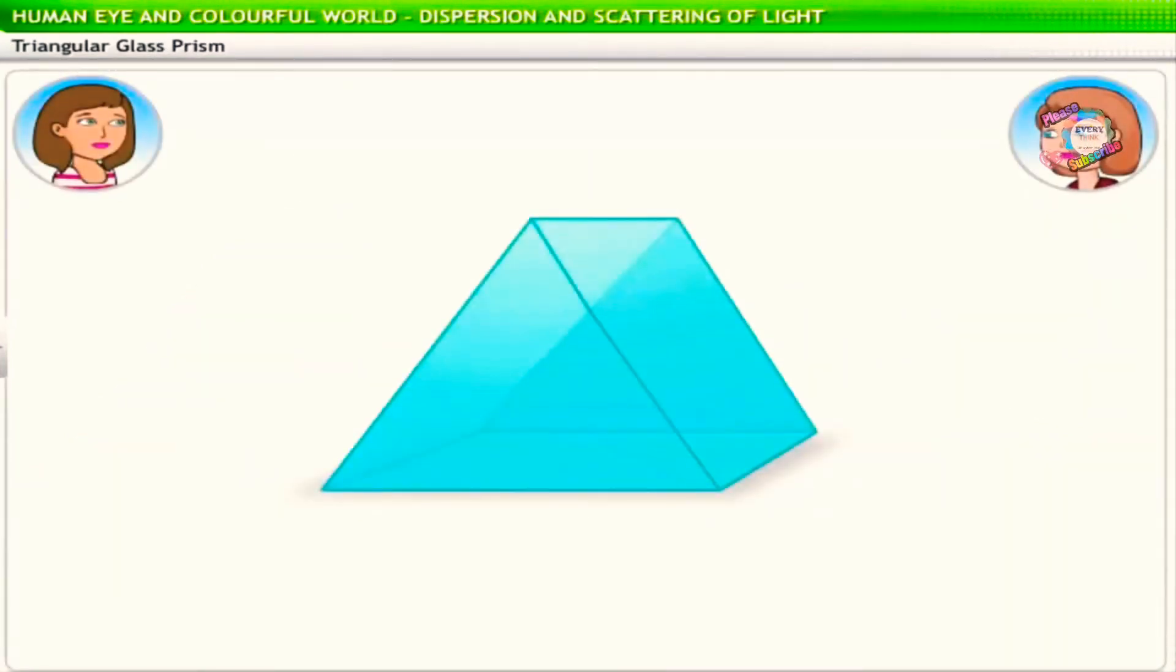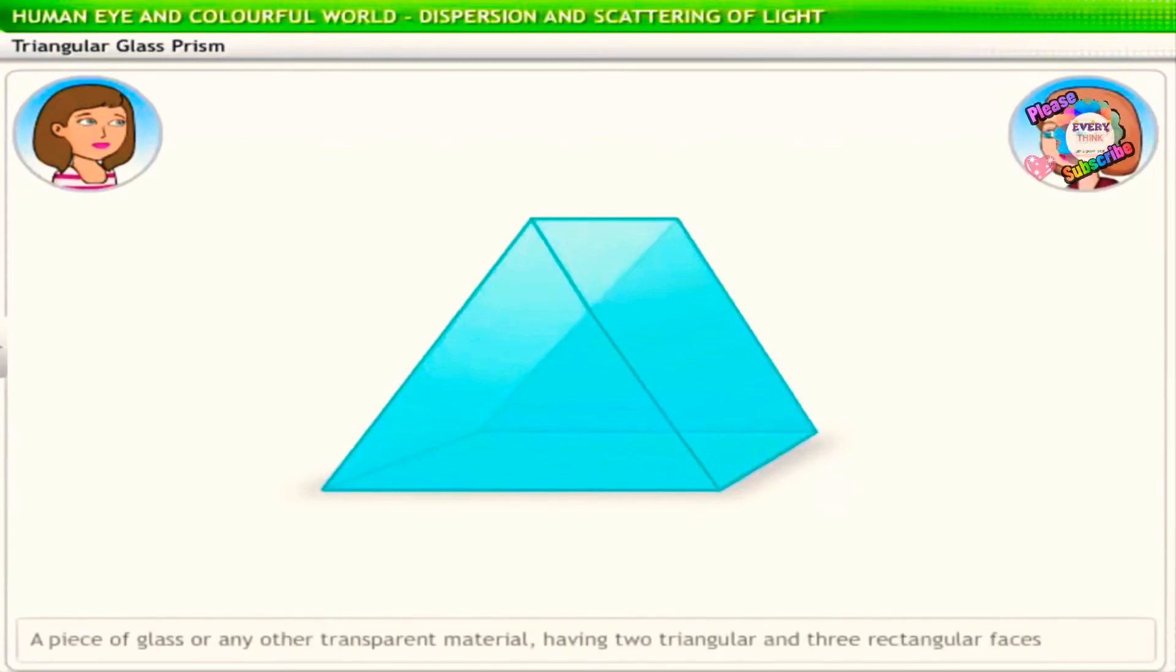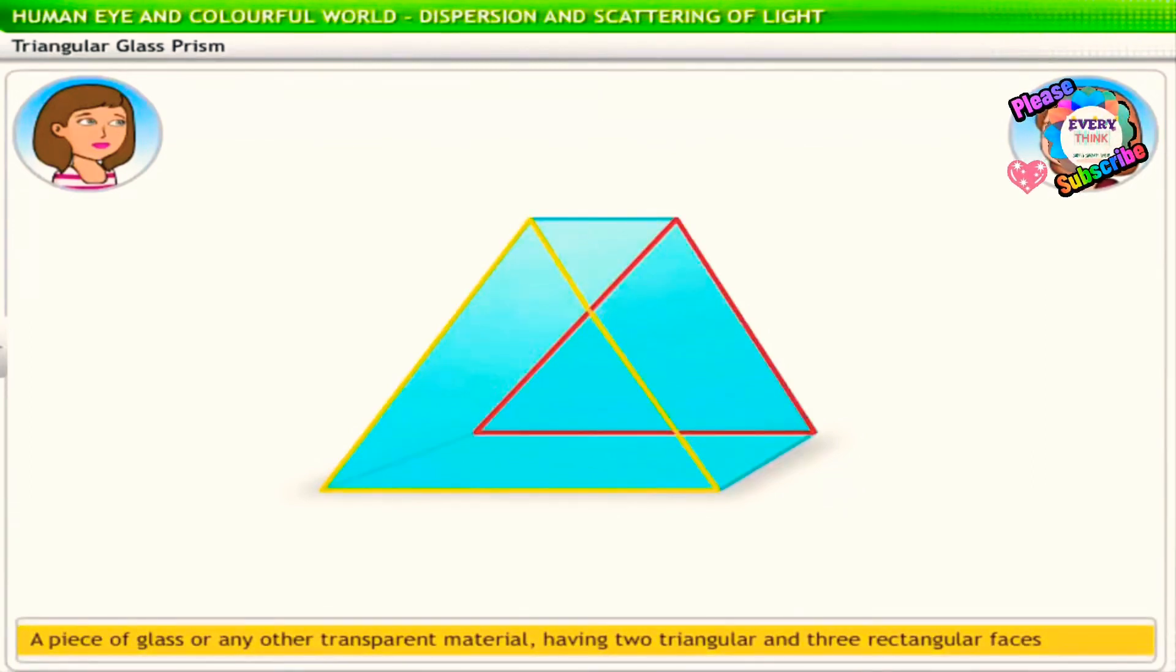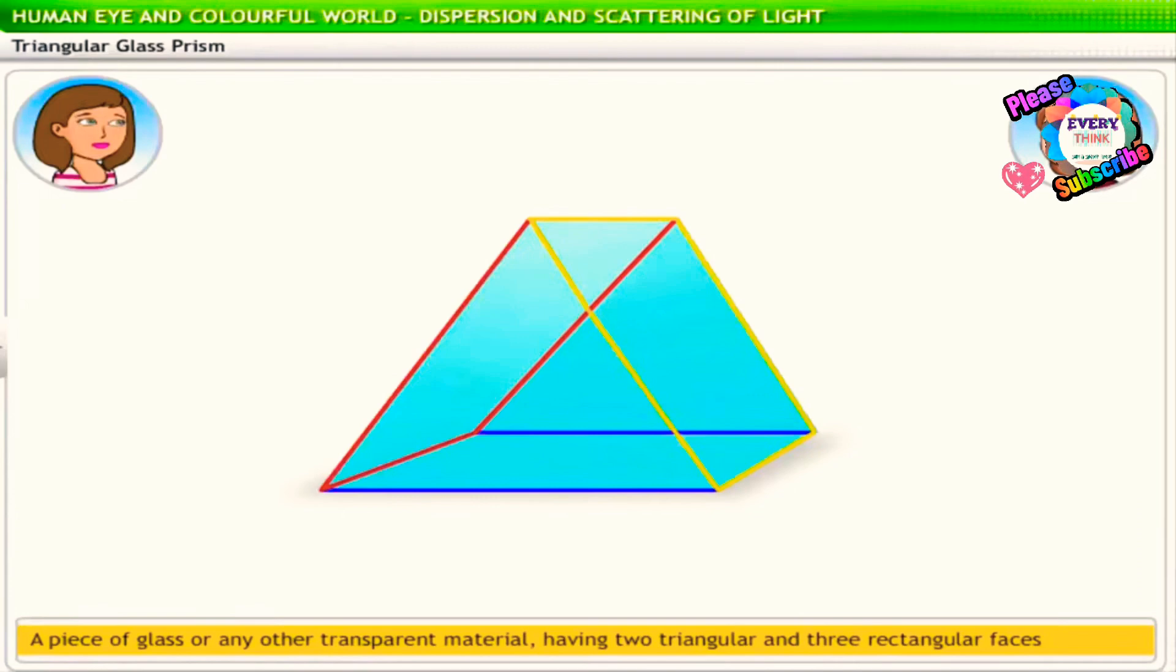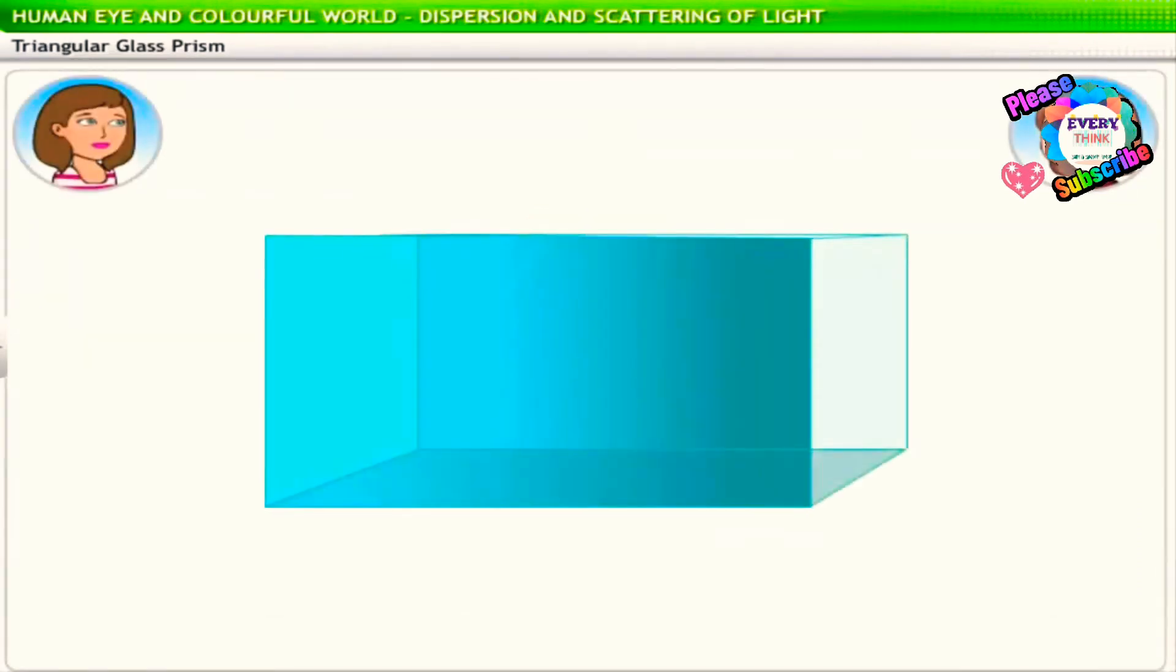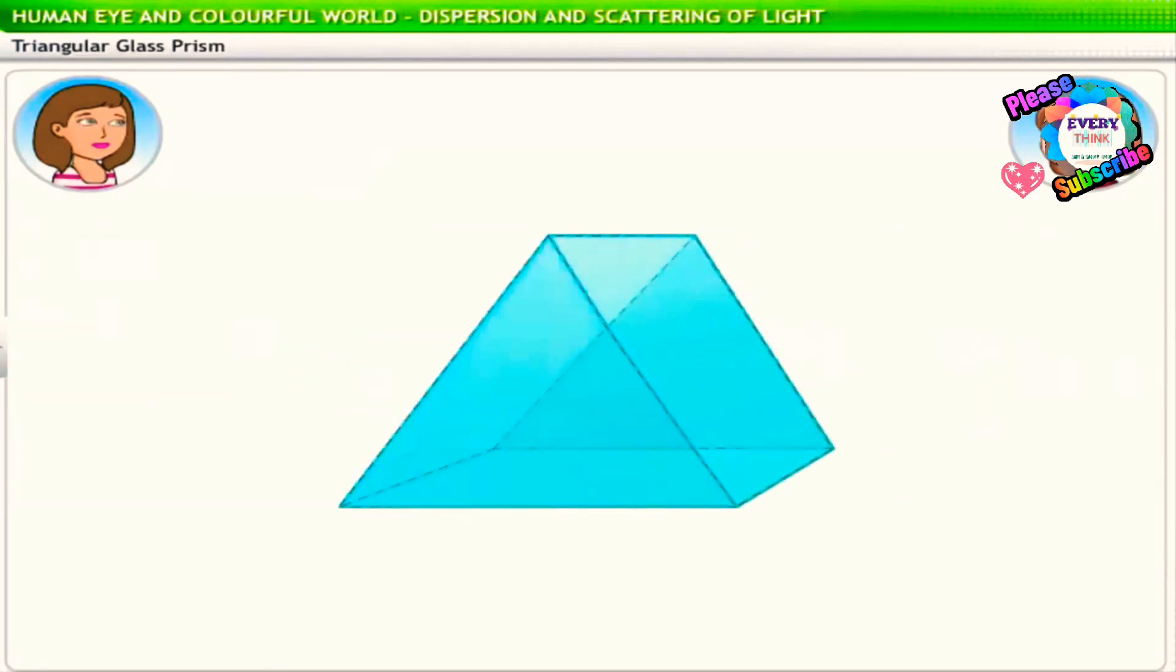A triangular glass prism, to be specific, is a piece of glass that has two triangular and three rectangular faces. You can think of a prism as a triangular piece of glass carved from a white bottom glass slab.